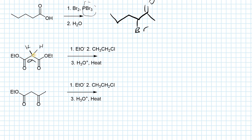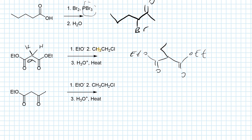In the first step, we form an enolate ion, which reacts with the alkyl chloride in an SN2 reaction to alkylate the alpha position. The product of this step is the malonic ester with the new alkyl group at the central carbon. Then, under acidic conditions with heat, we carry out decarboxylation: the esters hydrolyze to carboxylic acids, and one carboxylate group is lost as CO2.